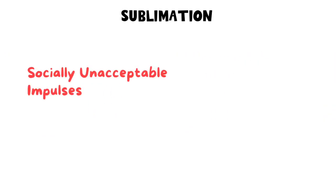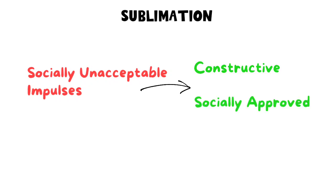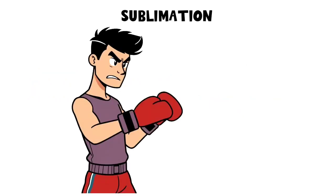Sublimation. Sublimation transforms socially unacceptable impulses into constructive, socially approved behaviors. For instance, aggressive urges might be channeled into sports or artistic expression.